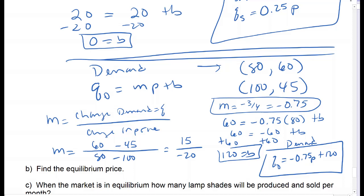So my supply equation is 0.25 times price, and my demand equation is negative 0.75 times price plus 120. Demand always has a negative slope. That's the hard part—finding the supply and demand—because there are a lot of little things that can go wrong: messing up which goes with supply vs. demand, or flipping price and quantity.